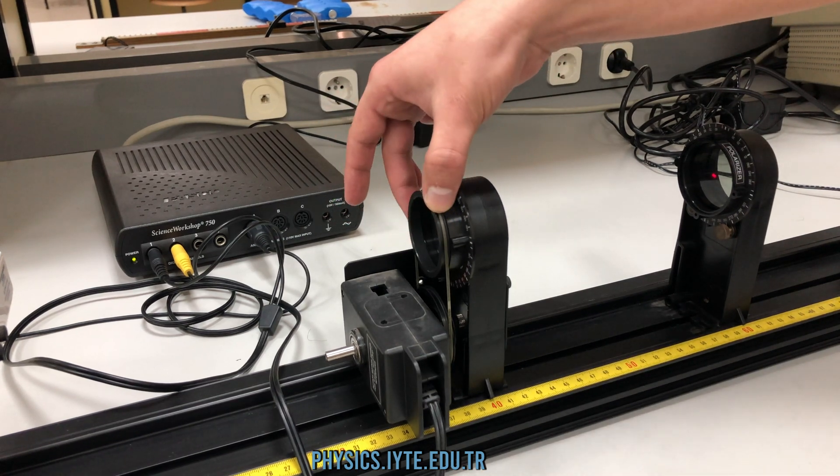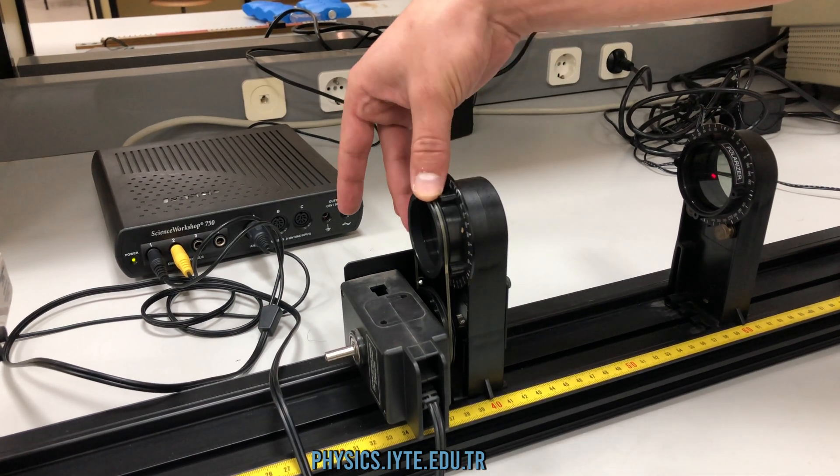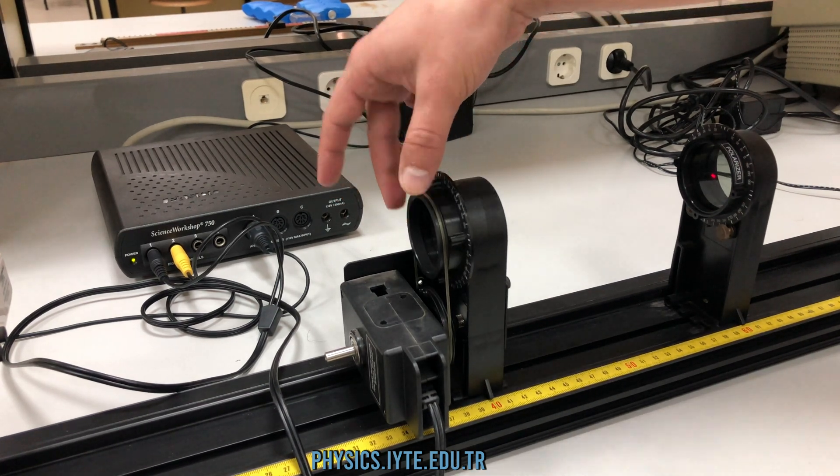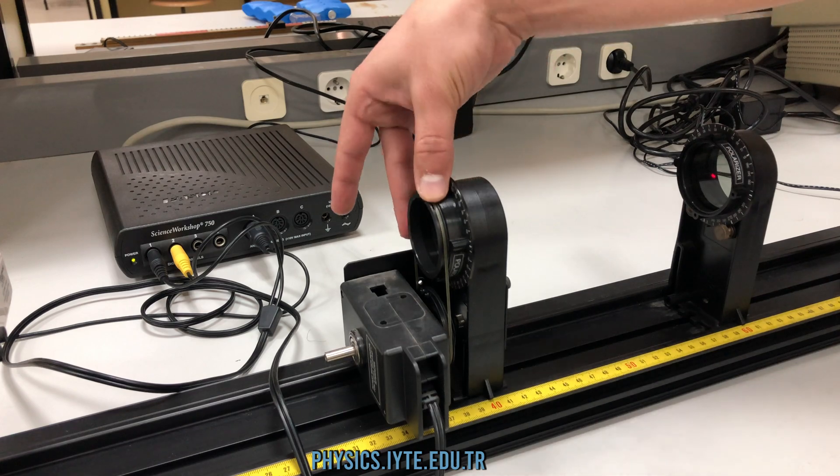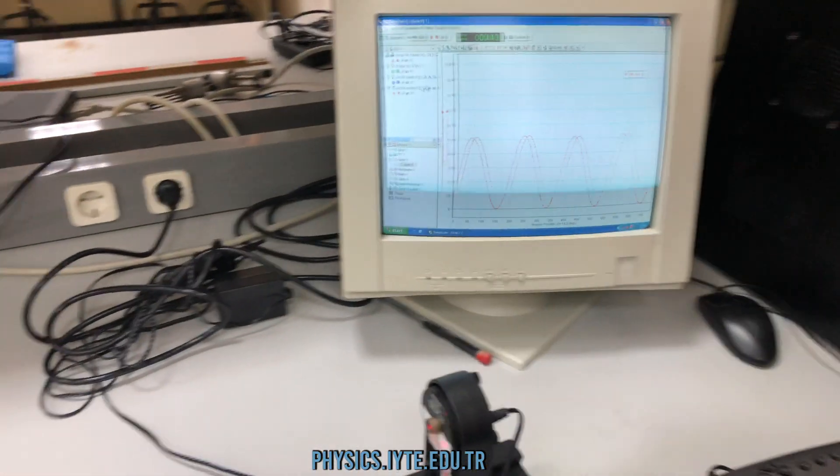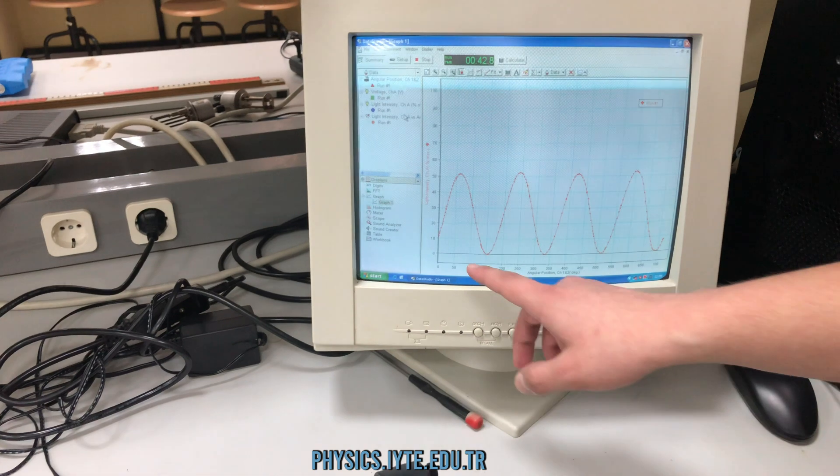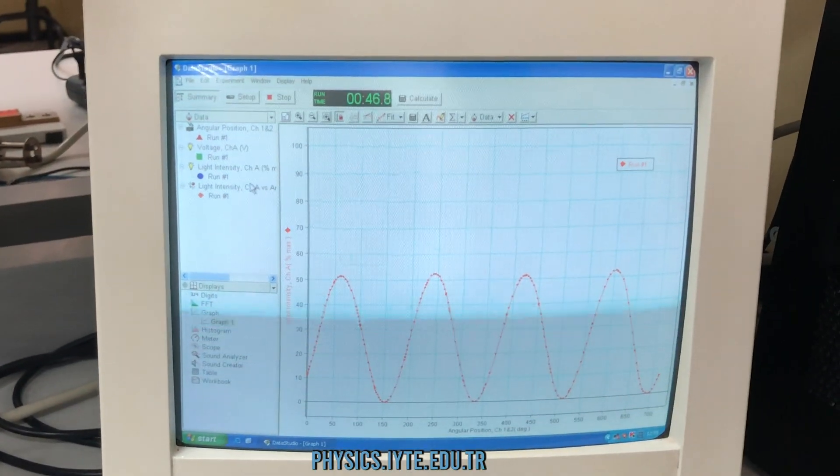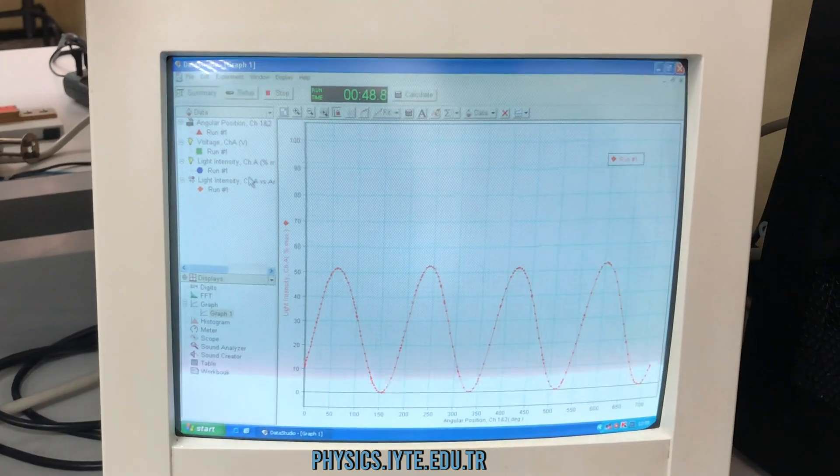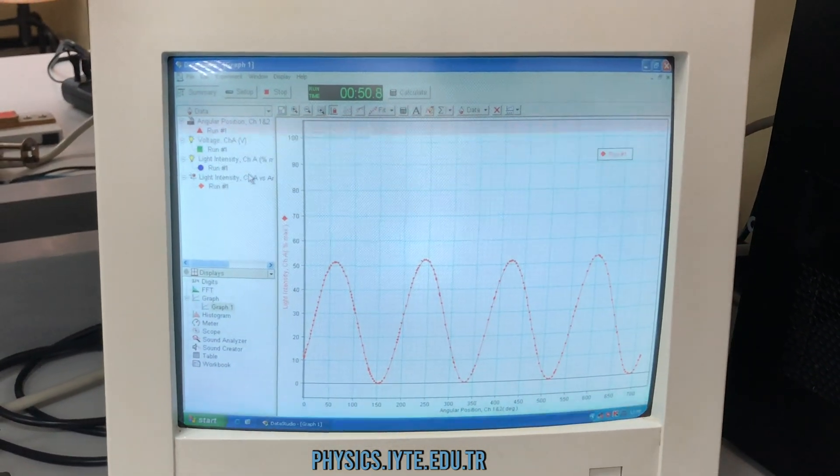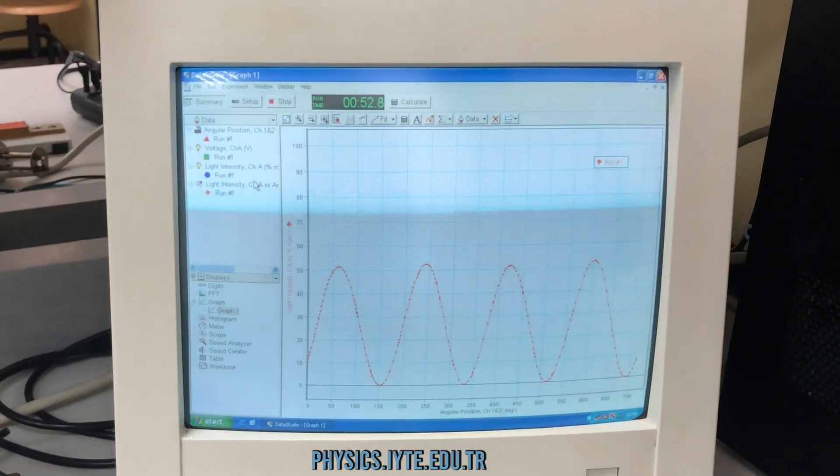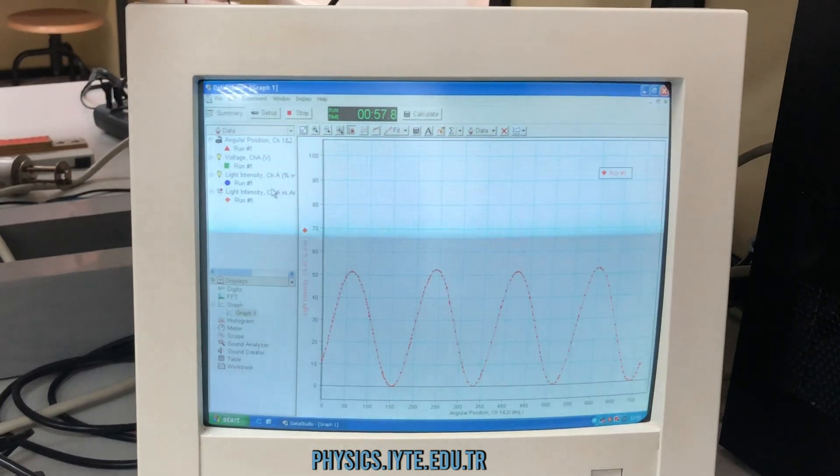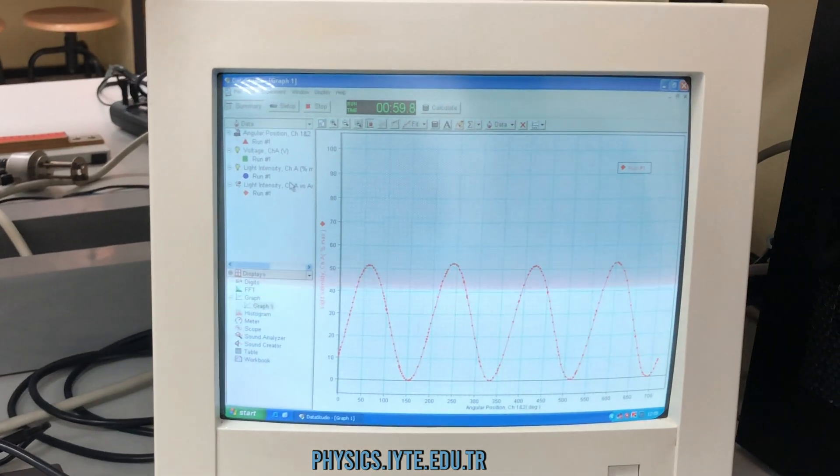After a couple rotations, we are going to see a sinusoidal intensity measurement, which confirms that the intensity of the light is related to the cosine square of the angle between the initial polarization of the light and the polarizer's axis.